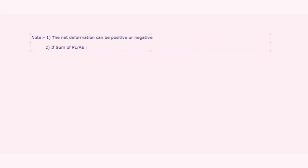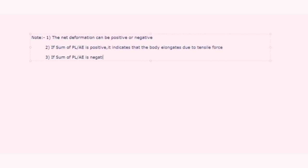Some important notes: the net total deformation can be negative or positive. If the summation of PL/A is positive, it indicates elongation — the tensile force is greater than the compressive force. If the summation of PL/A is negative, it indicates the body compresses or shortens — the compressive force is dominant.